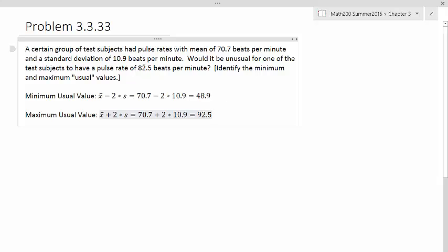So what we want to do is we want to know if 82.5 is between these two numbers. In this case, it is. So we can just make that conclusion. 82.5 is between the boundaries for the usual values. So yes, this is usual.